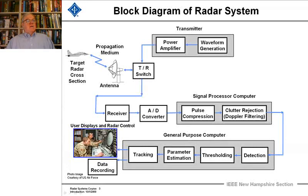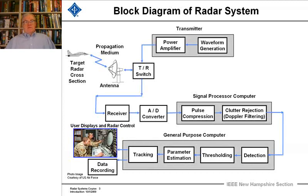Some of that energy will come back into the antenna. As soon as the transmitter stops transmitting, the switch turns into receive mode and the energy goes into the receiver section. The receiver will have a very low noise amplifier to amplify the signal and then convert it to digital format. All the processing — separating the target from background noise using Doppler effects and other techniques — will be done in the digital domain. The signal then goes into the signal processing computer where pulse compression, Doppler filtering, and clutter rejection are performed one after the other.